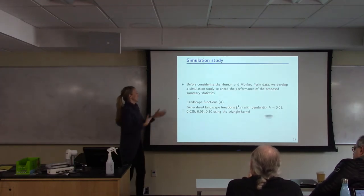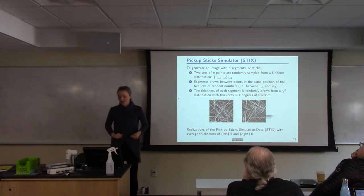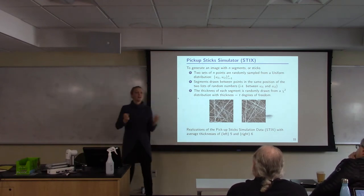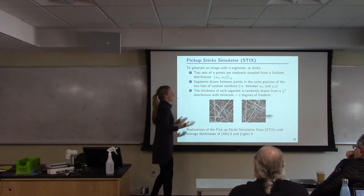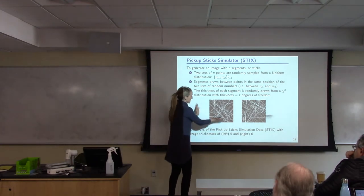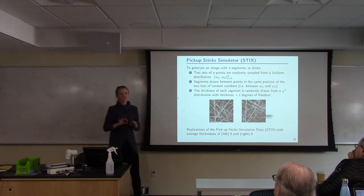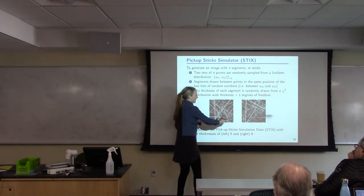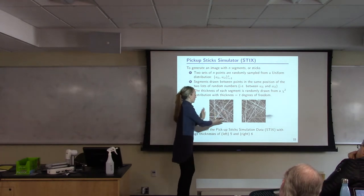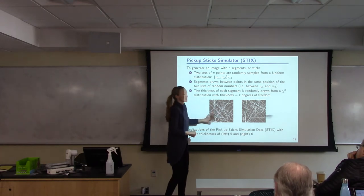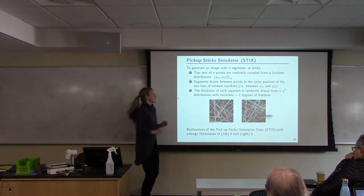Okay, so we consider these functional summaries for the human fiber data. But first we wanted to test this out. So we developed a simulation study, and we call it the pickup sticks simulation. And so some of you may have, growing up, you get those sticks and then you drop them, and you try to remove them all without hindering or removing any of the others. And so that was kind of what the fiber data looked like to us. So we developed a simulation study that produces images like this in order to test these different test statistics, to see which ones are best able to detect differences. And what we are changing in these six images were the average thickness of the lines.